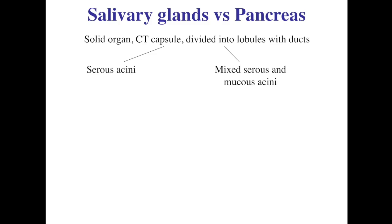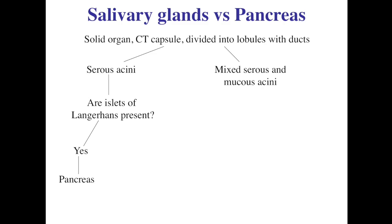If the gland is made up entirely of serous acini, the next question is: are there islets of Langerhans present? If there are, then you're looking at a section of the pancreas. If there are no islets of Langerhans, then the only remaining possibility among the major salivary glands is the parotid — an entirely serous major salivary gland. Just a series of small, simple questions that breaks it down into simple decisions.